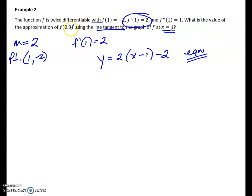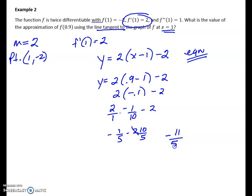But then they want us to plug in 0.9 to see what it's close to. So now I'm going to plug in 0.9. And I get 2 times negative 0.1, which is 1 10th. So I have 2 times negative 1 10th minus 2. This is negative 1 5th minus 2. Change this into a 5th. So I get negative 11 5ths.